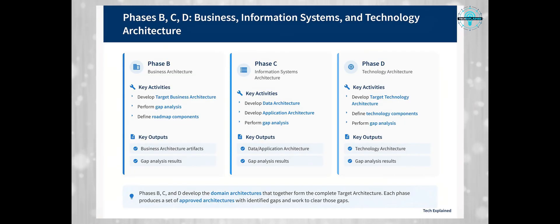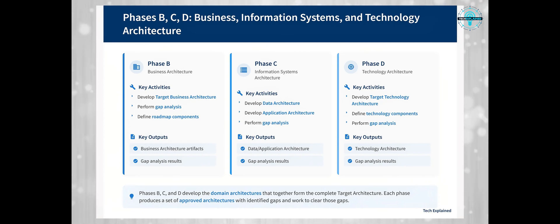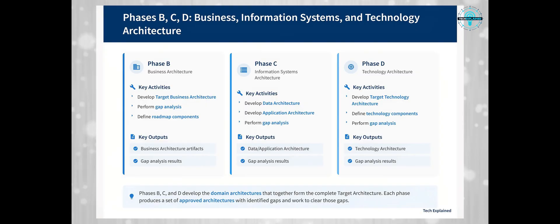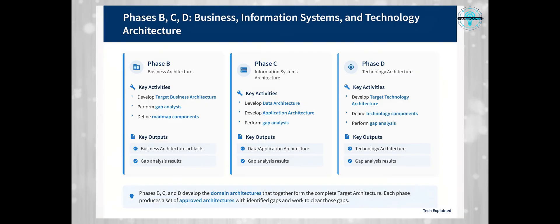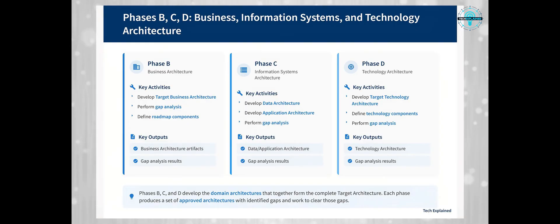Now let's look at Phases B, C, and D together, as they all focus on developing the target architecture across different domains. Phase B is all about Business Architecture — developing the target business architecture based on the architecture vision. It focuses on business strategy, governance, organization, and key business processes, answering the question: what does the business need to do to achieve its goals? Phase C covers Information Systems Architectures, including both data and application architectures. Data architecture describes the structure of an organization's logical and physical data assets, while application architecture provides a blueprint for individual application systems, their interactions, and their relationships to core business processes. This phase answers: what information and applications do we need to support the business?